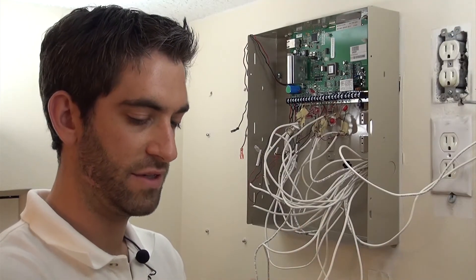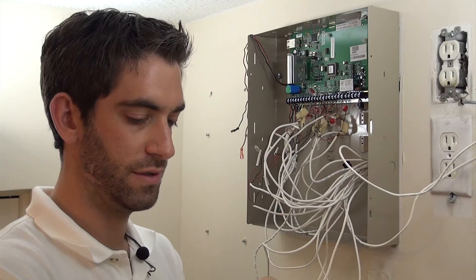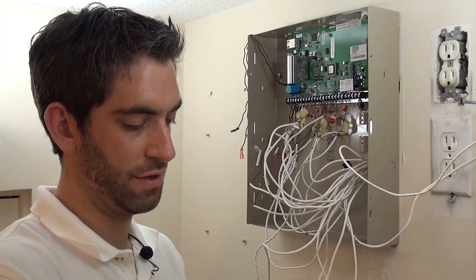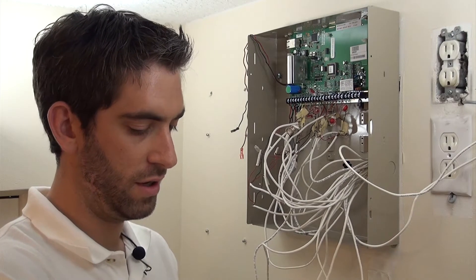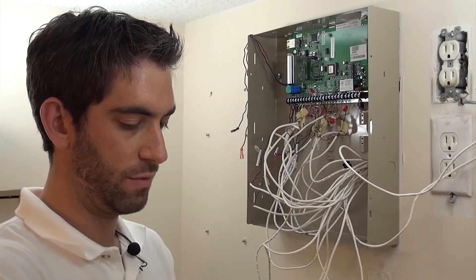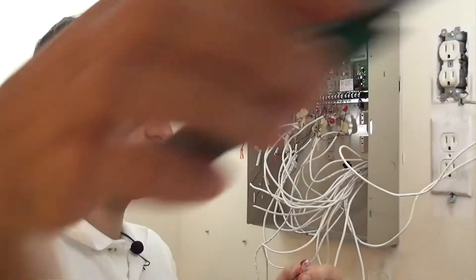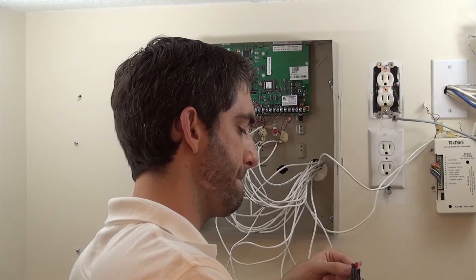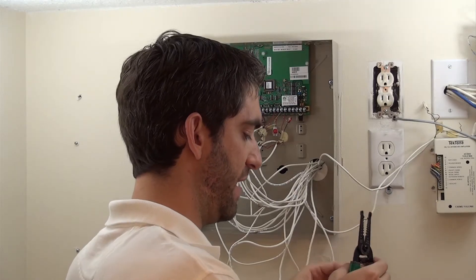Zone 10 is our master bedroom windows. There's two of the windows and because our original installation or home run, each contact, we're going to run them in series, so we're going to match black and red, crimp that down.